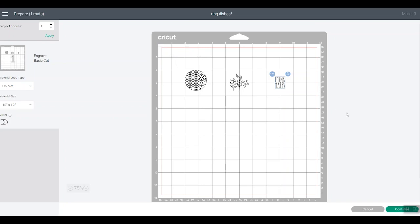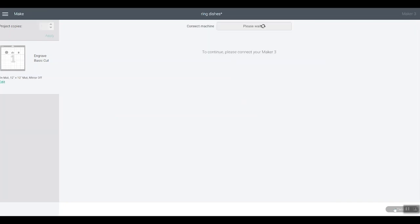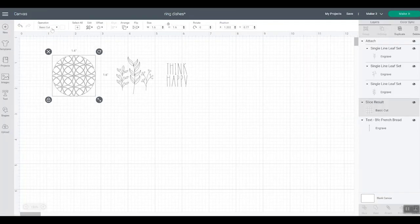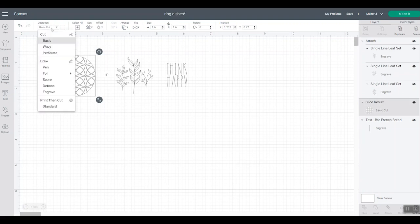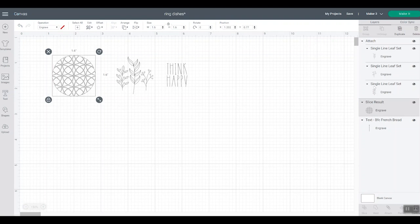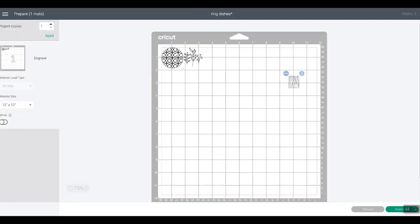Then once we have it all located, everything's on our mat, we'll just click continue. And I just want to note when I sliced this one, it did not make it an engrave. It made it a cut. So I'm going to go back, pick engrave for that. So now engrave is on everything. So be sure to double check and make sure engraving's on everything. Then we'll click make it. Then you'll want to move again, your pieces around, make sure they're located correctly with the blanks that you've located on your mat. Then click continue.